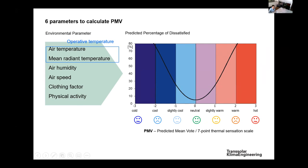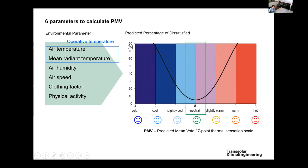The six parameters influencing thermal comfort are: air temperature, mean radiant temperature, air humidity, air speed, clothing factor, and physical activity. What we want to achieve in all indoor and outdoor comfort design is a predicted mean vote between plus and minus 0.5. Within this range, we are always at around 10% dissatisfied people, giving an overview of how these metrics relate to the statistical comfort of people on a global scale.